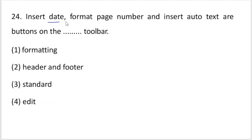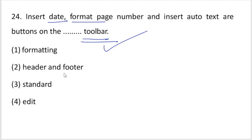To insert date, format page number, and insert auto text — these buttons are found on which toolbar? The answer is the Header and Footer toolbar. Insert date, format page number, and insert auto text or buttons are available on the Header and Footer toolbar. Try to answer in the comment section first.